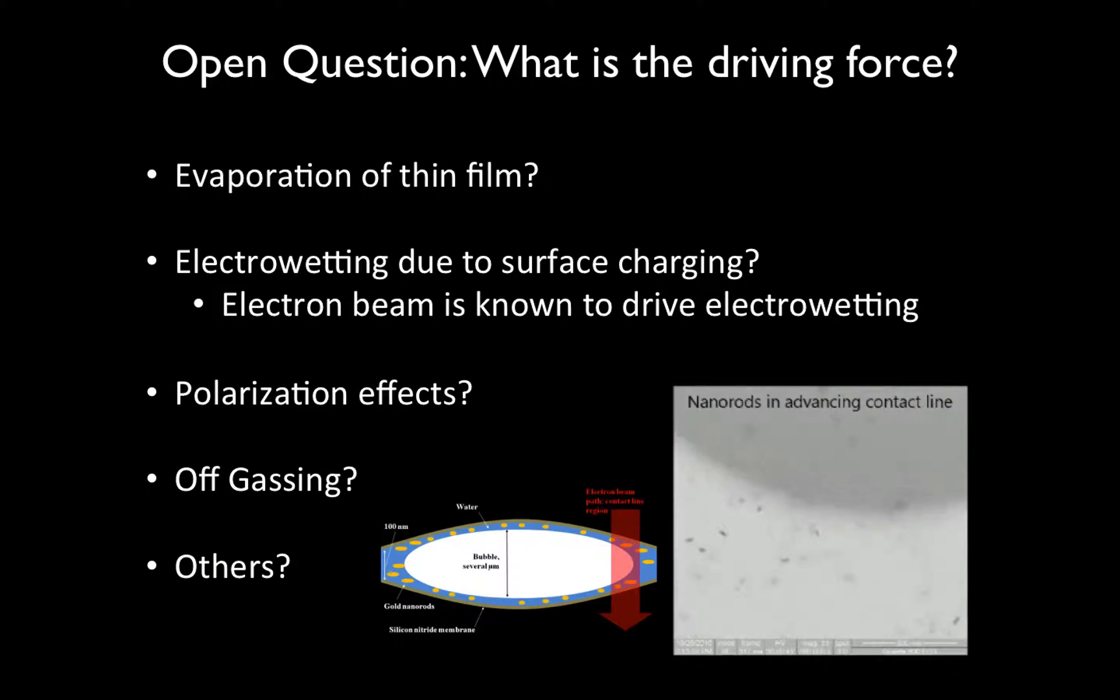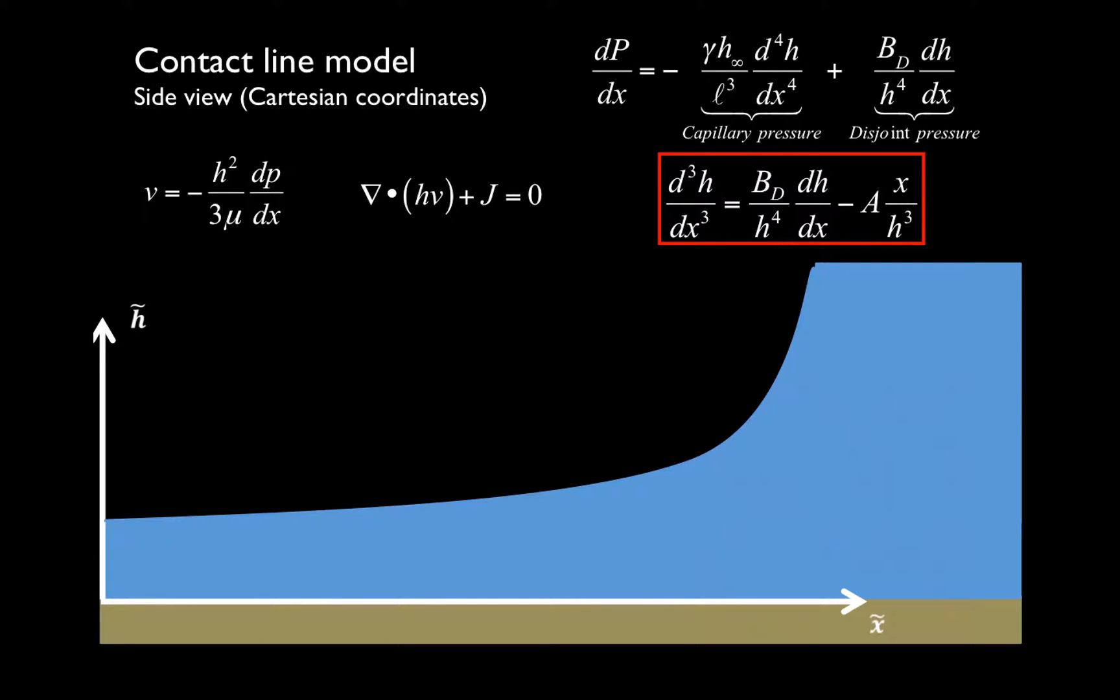So we have an open question left in this: what is the driving force that actually causes the interface to move and also ultimately causes the convection? First, the first thing that we thought it was, was evaporation. And we came up with a simple model that I'll go over next. But there are other possibilities, and we're not exactly sure as to what the driving force is. We know it's beam mediated, but we're not sure of exactly what's causing this system to move. Nonetheless, we can look at evaporation and use it as a model system.